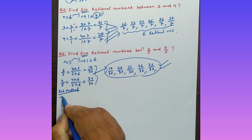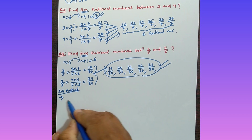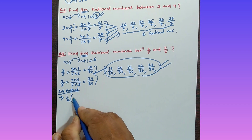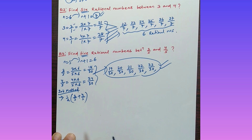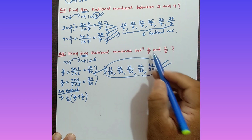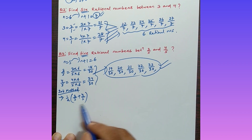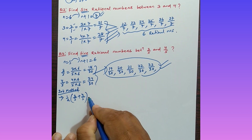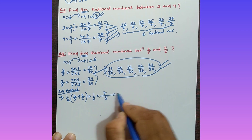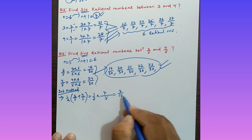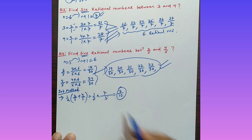The second method uses the mean/averaging approach. To find the first rational number between 3/5 and 4/5, take one-half of their sum: (1/2) × (3/5 + 4/5). The LCM is 5, so this becomes (1/2) × (7/5) = 7/10. So 7/10 is the first rational number between 3/5 and 4/5.